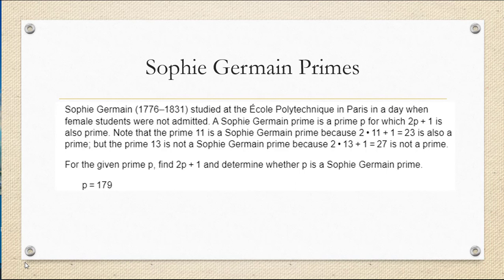Sophie Germain noticed that often if you plug a prime p into that formula, 2p plus 1, you get a prime again. That's why it's called a Sophie Germain prime.